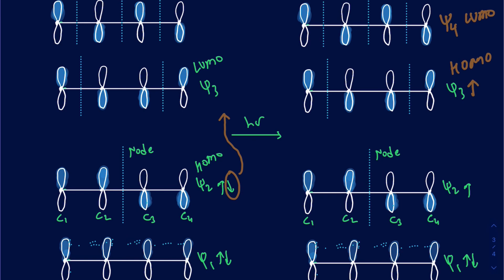This is how you look at the differences between photochemical and thermal conditions. It plays an important role in the stereochemistry of pericyclic reactions, but knowing the basics is always important.